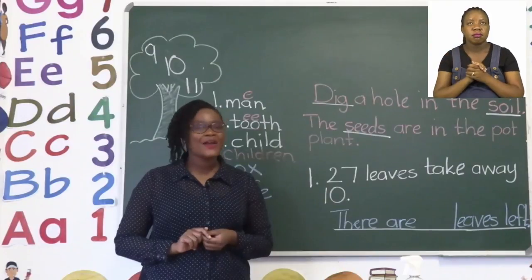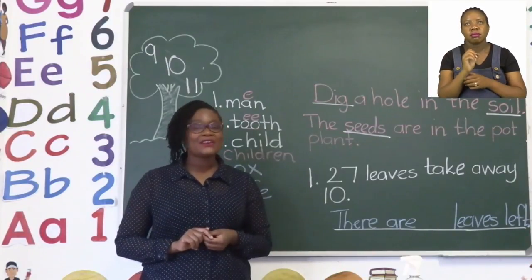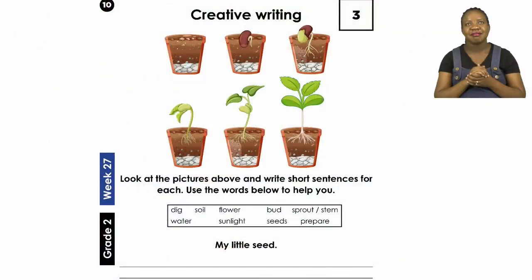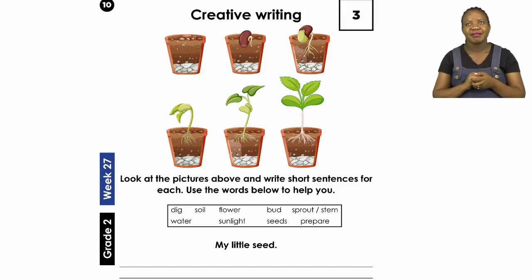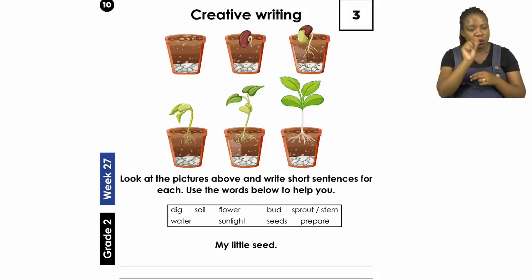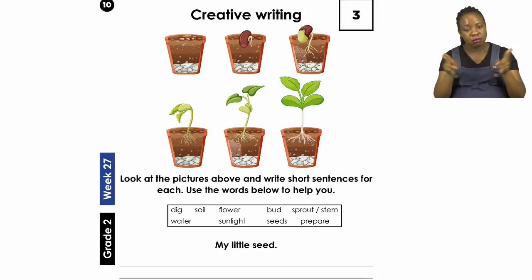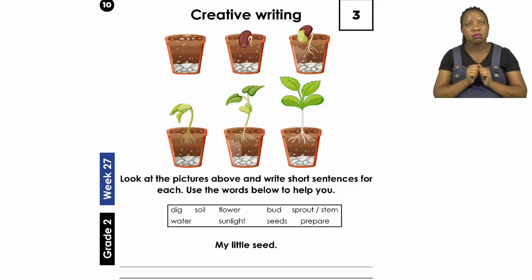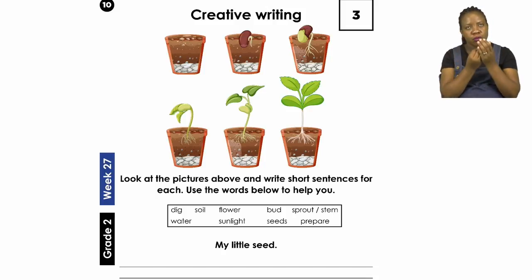Let's now move on to the next page, page 10. On page 10 we are going to have so much fun with creative writing. Creative writing is when we come up with sentences using either the words we've been given or the pictures. Today we're going to be using both. It says: look at the pictures above and write short sentences for each. Use the words below to help you.